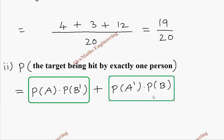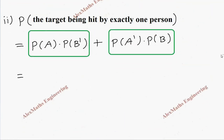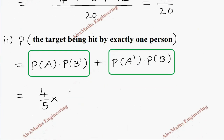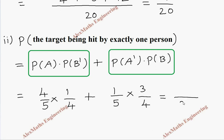Here A hits and B does not hit; or B hits but A does not hit the target. Substituting the values: P(A) × P(B') = 4/5 × 1/4, plus P(A') × P(B) = 1/5 × 3/4. The common denominator is 20, and in the numerator it is 4 + 3 = 7. So the answer is 7 by 20.